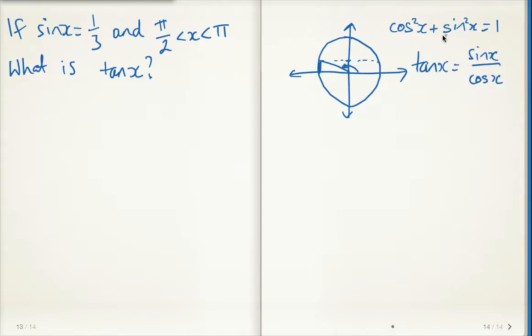All right, so let's start this question. First, I'm going to use that first formula to try and find cos x. Okay, so cos squared x plus sine squared x is equal to 1. So cos squared x plus 1 third squared is equal to 1. All right, I just substituted sine x from this question into here.